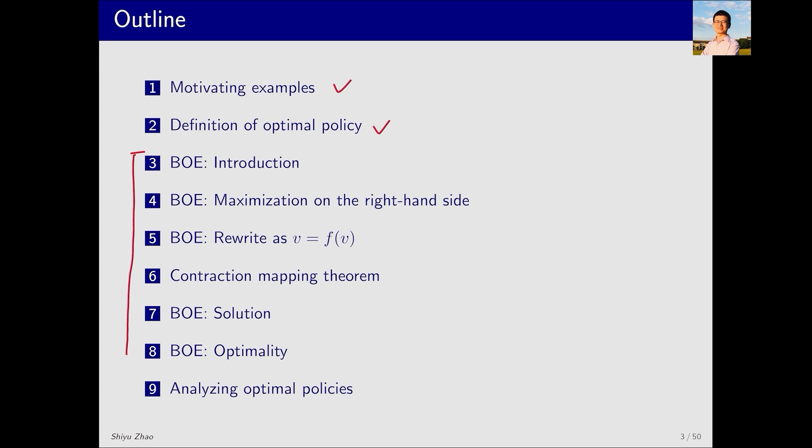Then, we will thoroughly explore the Bellman optimality equation from sections 3 to 8, including what this equation looks like, how to solve it, its solutions, properties, and more. With the Bellman optimality equation, we can derive the optimal policy and also discuss its properties towards the end of the lecture.